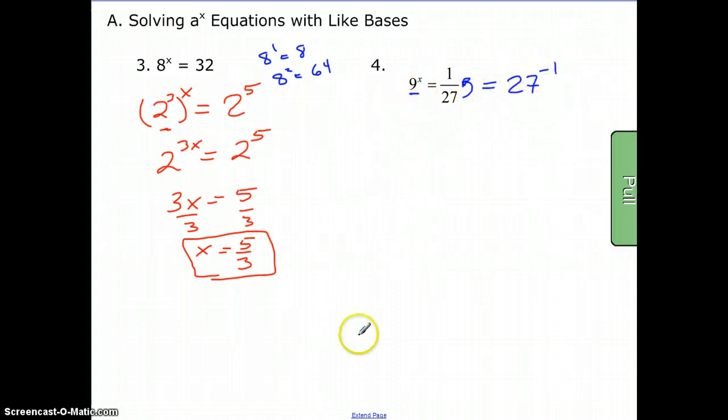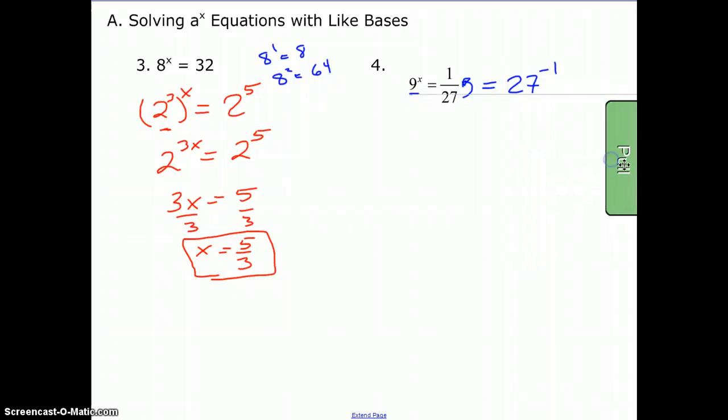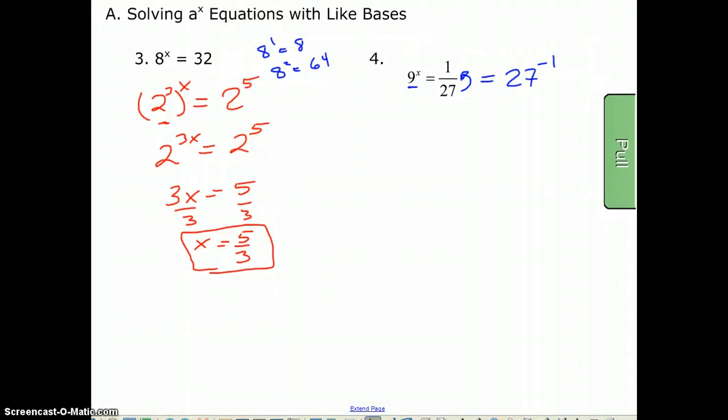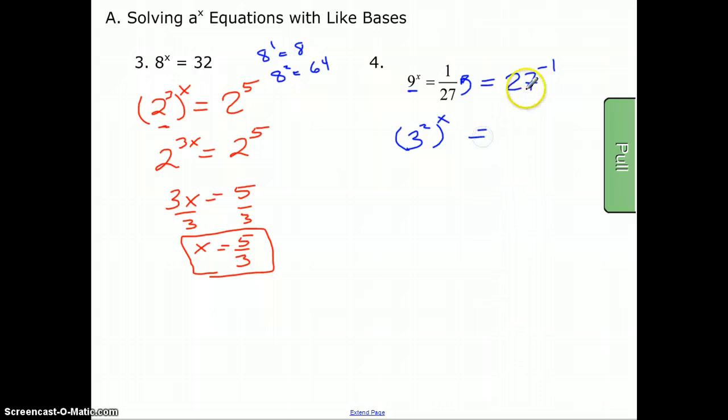You might want to look at your power table. So we're going to try to get these in the same basis. So nine looks like the perfect square of three, so I'm going to write that as 3^2. And I encourage you to use parentheses here, and just leave the x up there in the first step. And twenty-seven can also be written as base three, but it's 3^3. Again, I'm going to add parentheses here, and put the negative one.